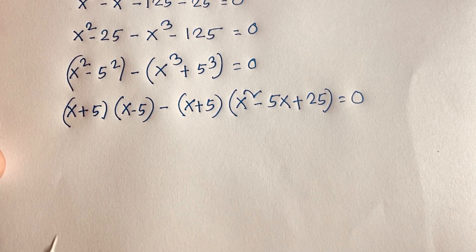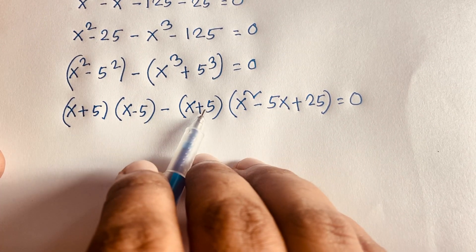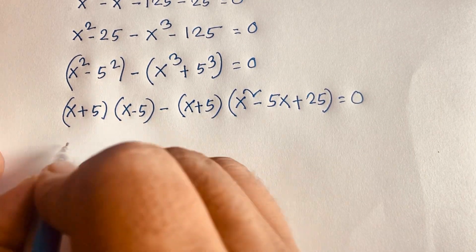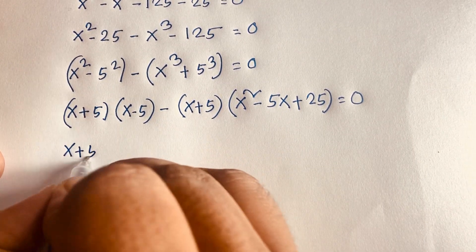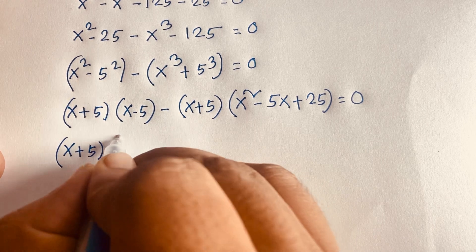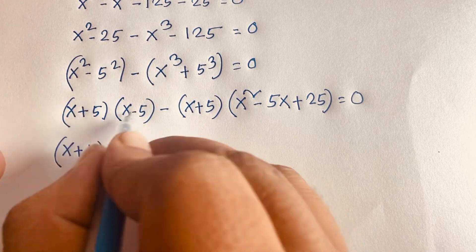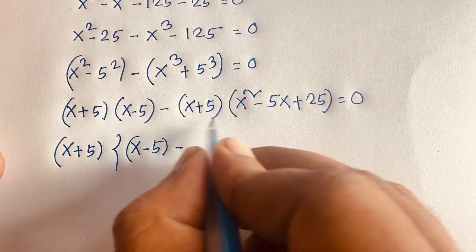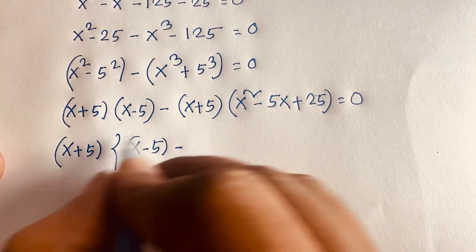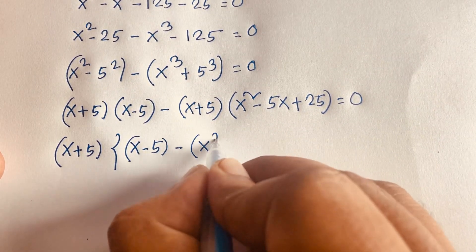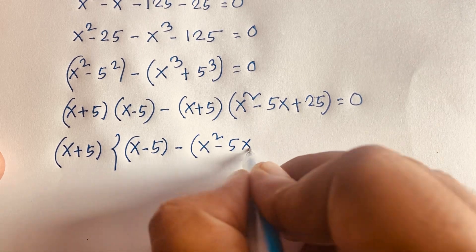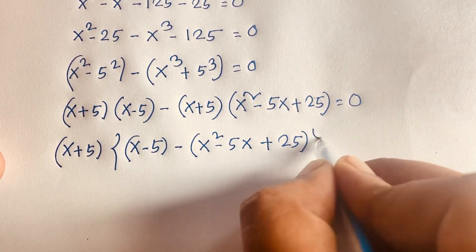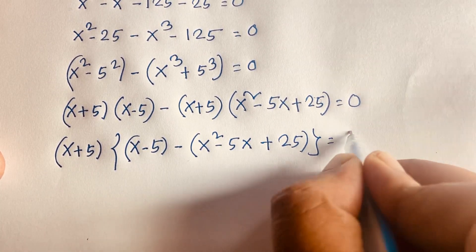Now, here we have x plus 5 as a common factor. So factoring out (x+5), dividing the first group gives x minus 5, and dividing the second group gives x squared minus 5x plus 25, so we get (x+5)(x−5) minus (x+5)(x squared minus 5x plus 25) equal to 0.